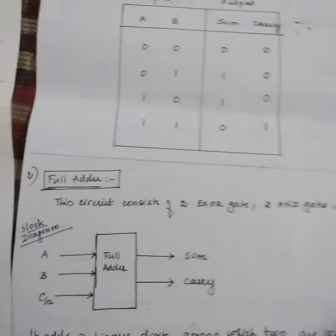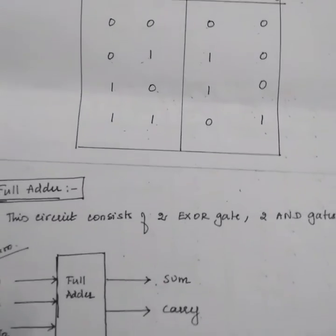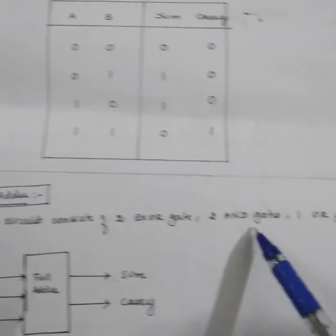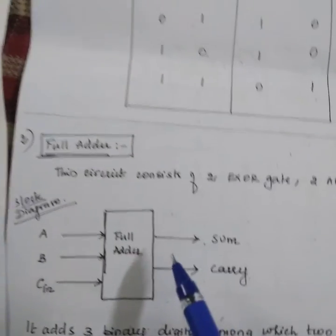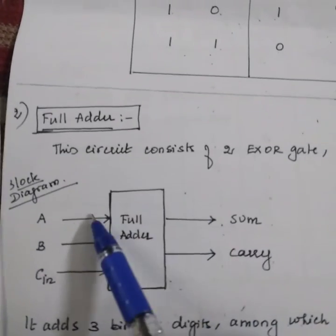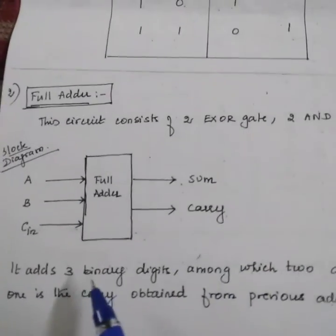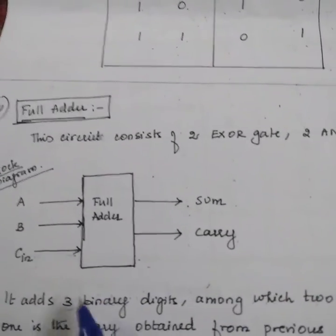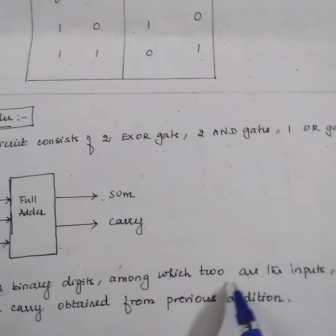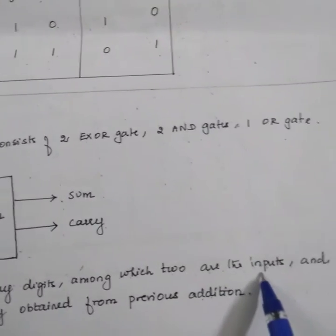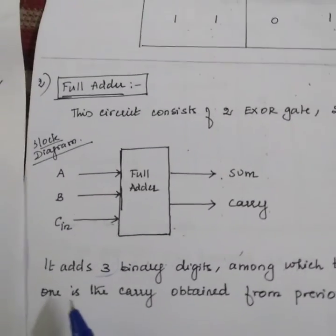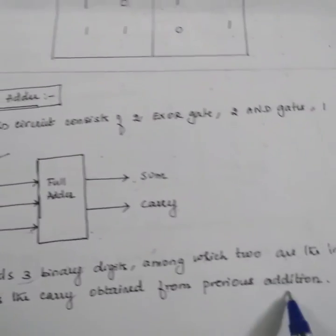Now let's see the full adder. Full adder consists of 2 XOR, 2 AND, and 1 OR gate. This is the block diagram. It adds 3 binary digits: the 2 inputs and 1 is the carry obtained from the previous addition.